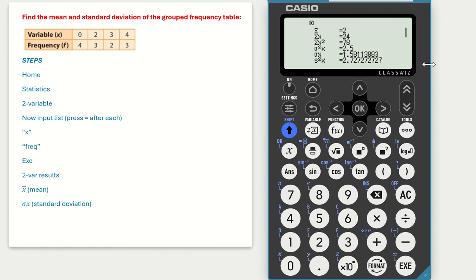So our mean is 2 and our standard deviation is 1.58. So those are the steps for finding mean and standard deviation of a grouped frequency table.